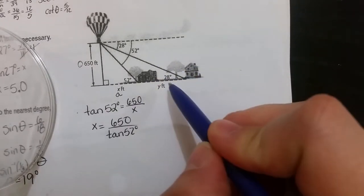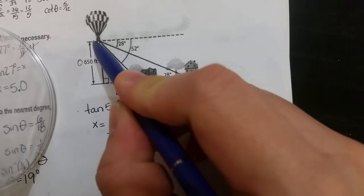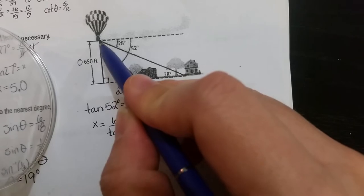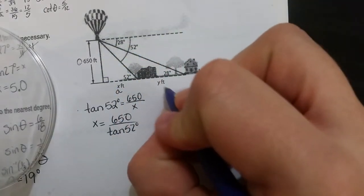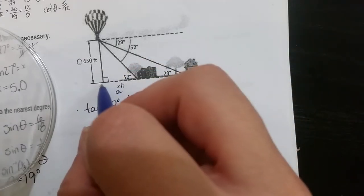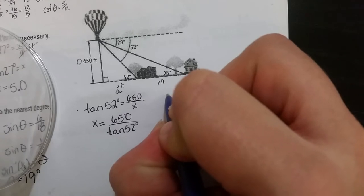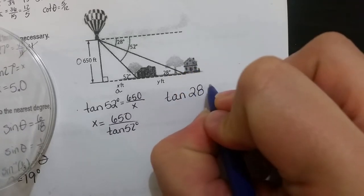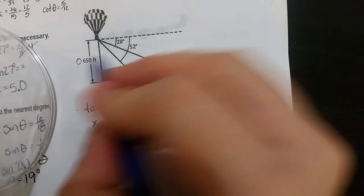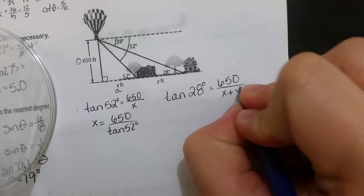So then I'm going to set up my other equation, which is going to be for the angle 28. Now notice you still need a right triangle, so you're still basically working with this really big triangle here. So again, I have the opposite, and the adjacent will be X plus Y. So I can say that tan of 28 degrees is equal to 650 over X plus Y.